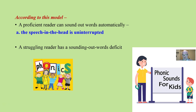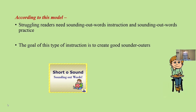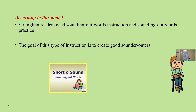According to this model, a proficient reader is a good sounder-outer — one who can sound out words automatically so that the speech in the head is not interrupted. If you are a struggling reader, you have a sounding-out word deficit. Thus, struggling readers just need a little more sounding-out word instruction and practice.